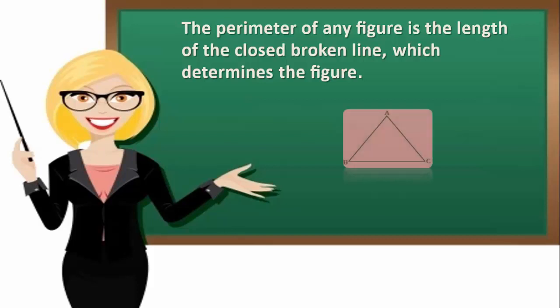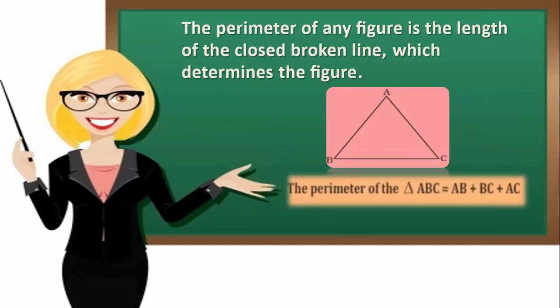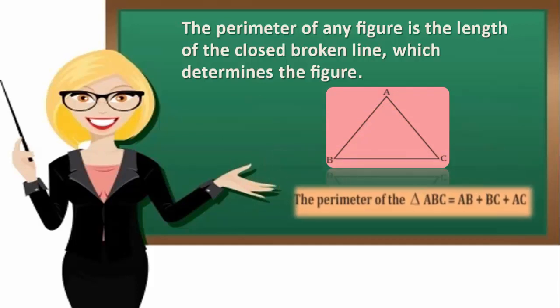The perimeter of the triangle ABC shown here equals AB plus BC plus AC.